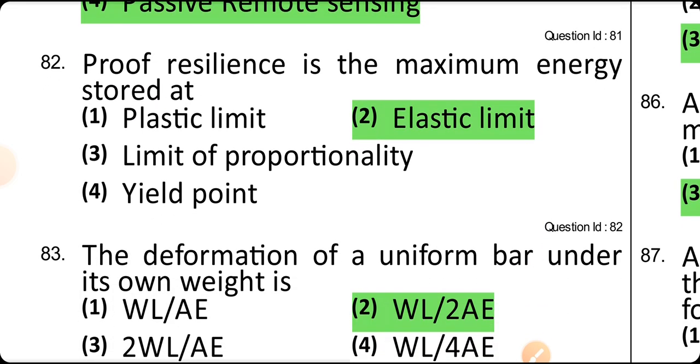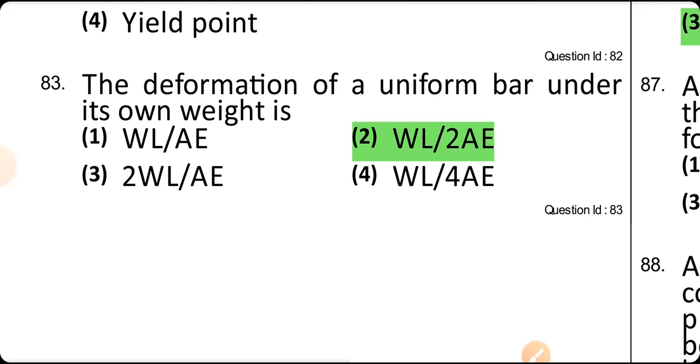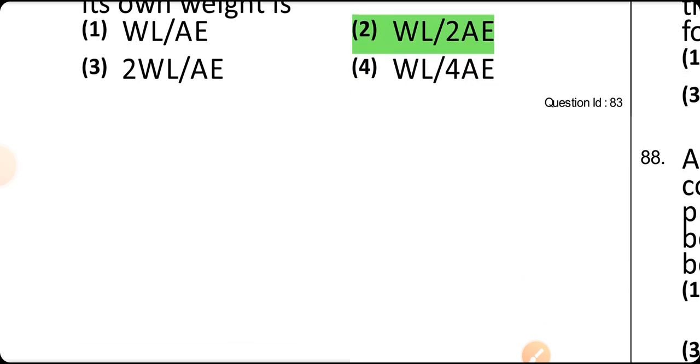Proof resilience is the maximum energy stored at the elastic limit. Deformation of a uniform bar under its own weight is WL/2AE.